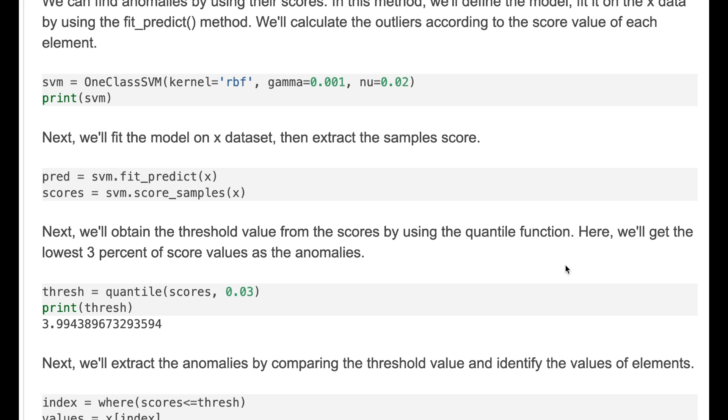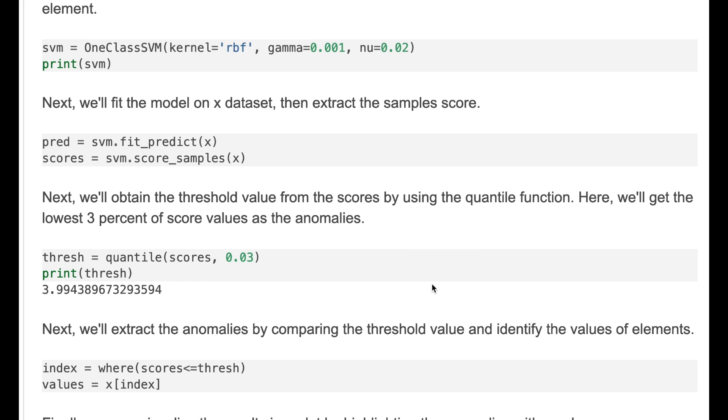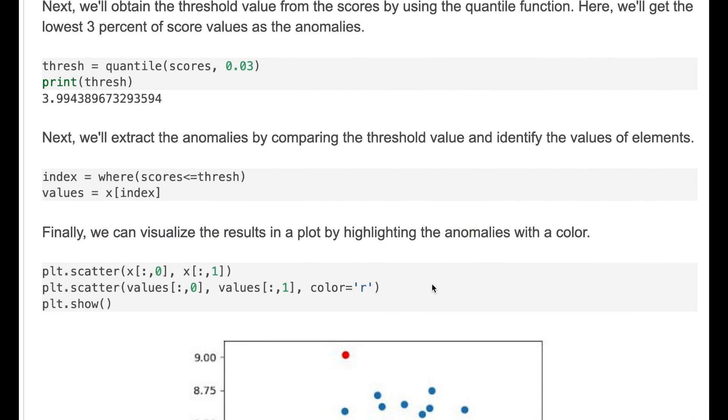We'll fit the model on X dataset then extract the samples as shown here. Then we'll obtain the threshold value from the scores by using quantile function. Here we'll get the lowest 3% of score values as anomalies. This is the threshold value.